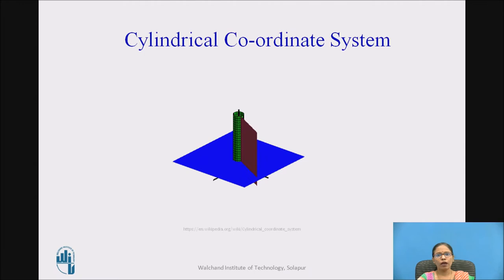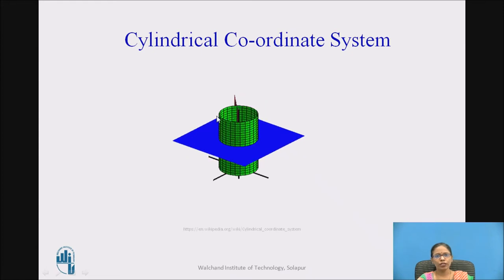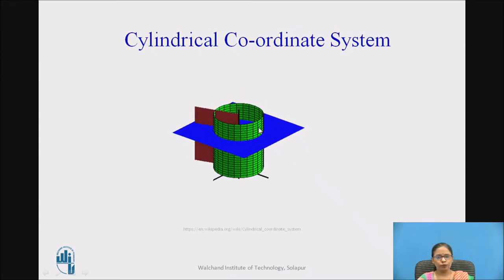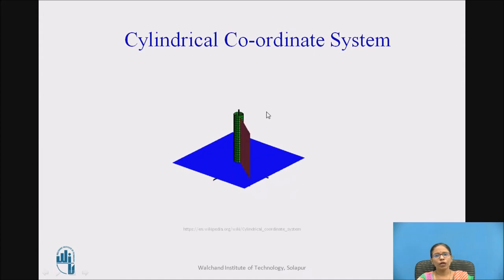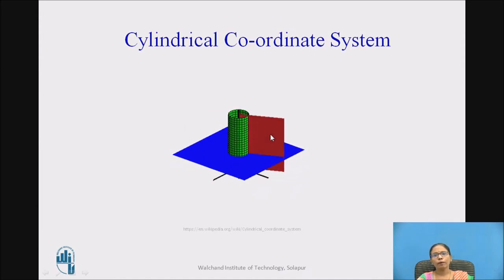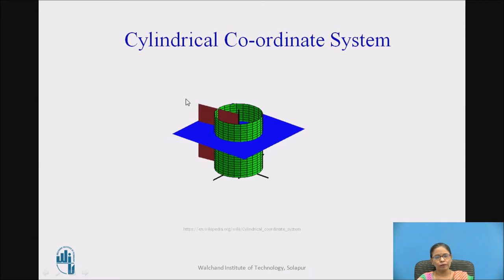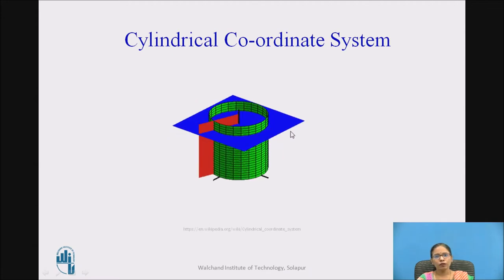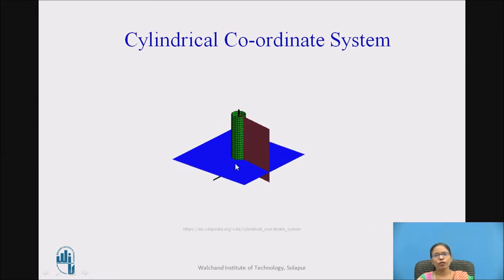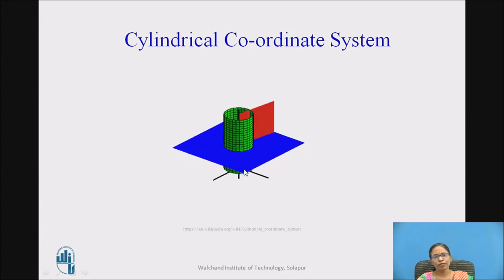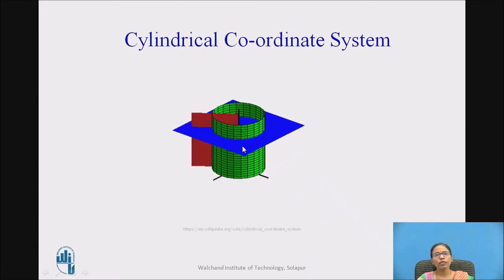Here the animated cylindrical coordinate system is shown. The green cylinder which is changing represents rho. The red plane which is moving around is the phi-constant plane — when it stops at a particular point, phi is constant. The blue plane which is changing with respect to height is moving along the z-axis; this is the z-constant plane, and when it stops at a particular point, z has a fixed value.